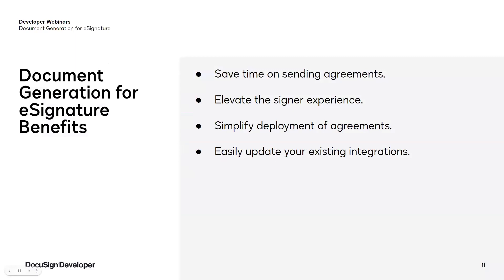Here's a summary of some benefits of using document generation. You can generate agreements faster by setting up your templates and then programmatically populating them with custom data at send time. You can improve the signer experience by providing personalized, professionally formatted agreements. You can simplify deployment of agreements by creating a single template that can adapt automatically to multiple agreement scenarios through conditional logic. Because document generation builds on existing DocuSign functionality, you can easily update your existing integrations to incorporate this feature.